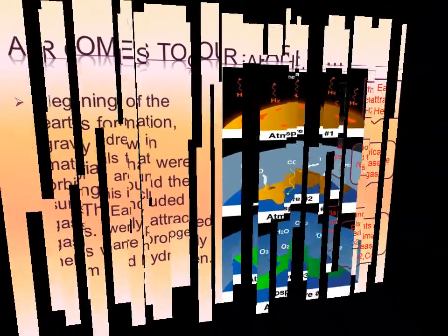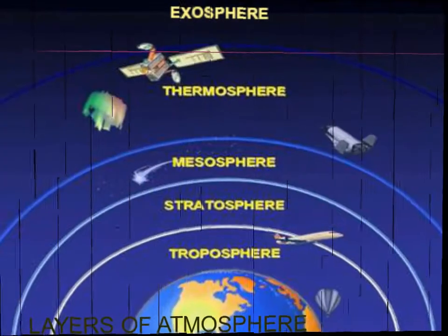The layer above the Earth's surface contains all of the Earth's atmosphere. Weather occurs in the troposphere. The stratosphere is very stable — many jet aircraft fly in this layer, although the ozone in this layer absorbs the harmful UV rays from the Sun.